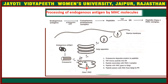This is MHC complex number one. After these peptides have entered the endoplasmic reticulum, the MHC complex which is present on the endoplasmic reticulum will bind this peptide onto its cleft. This is the cleft — so it binds this antigenic peptide into its cleft.